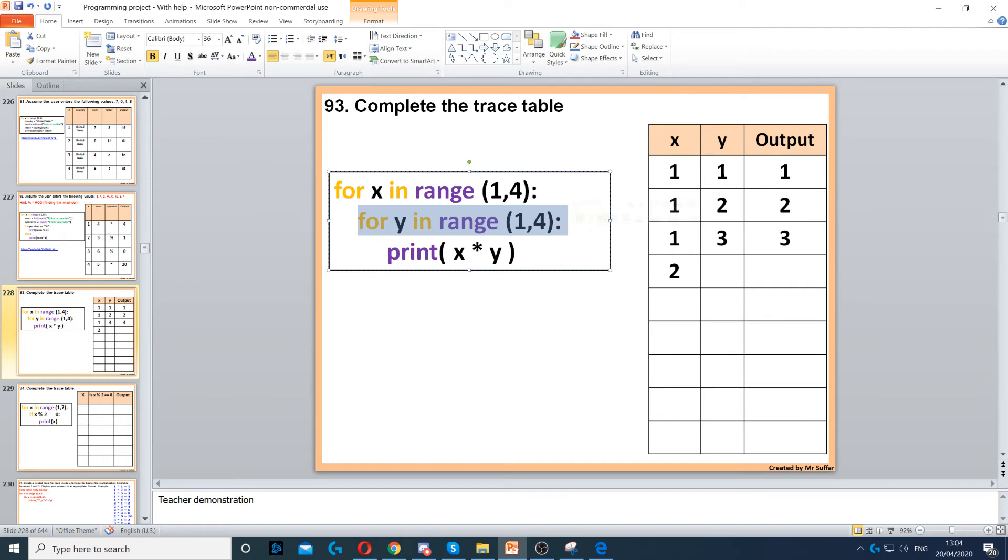Again, the inner loop will start with 1, so 2 times 1 gives us 2. Then x will stay 2, we're still inside the inner loop. Y will increase to 2, so 2 times 2 gives us 4. X is still 2 because we're still inside the inner loop. Y will increase to 3, so 2 times 3 is 6. Then we've finished the inner loop again.